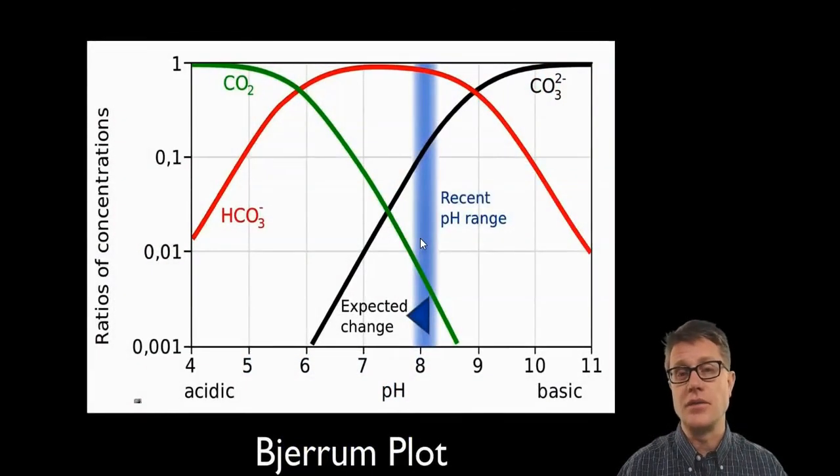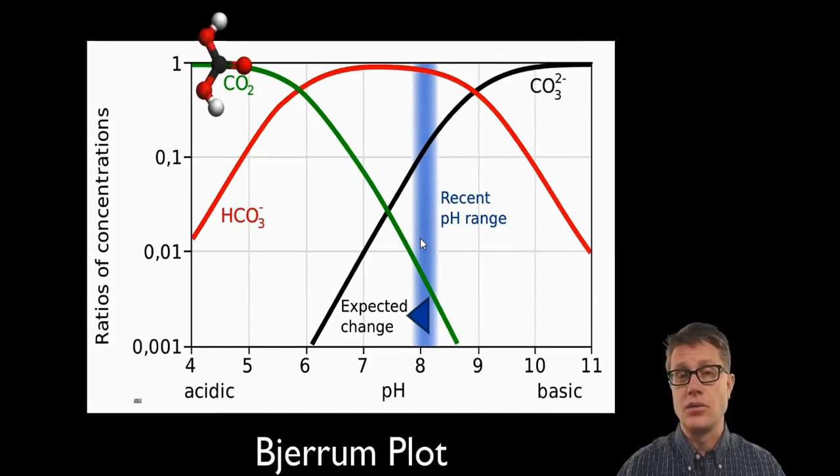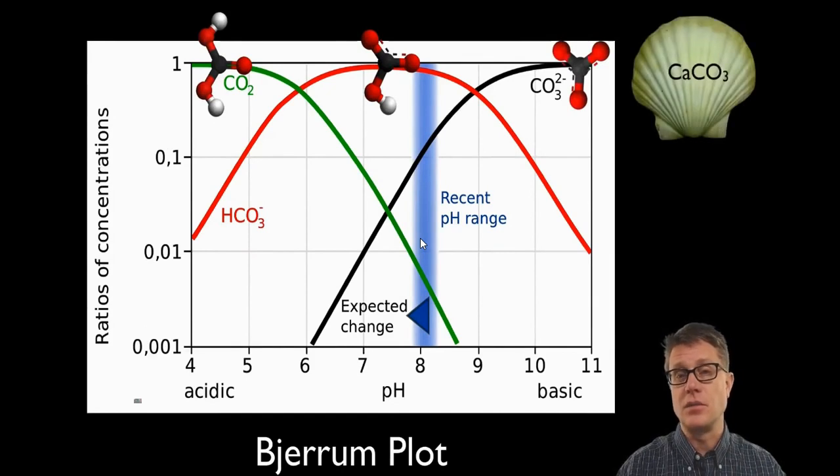So we can use a Bjerrum plot to figure out what's going to happen over time. These are log scales of the concentration of these three compounds. The green represents the amount of carbonic acid. The red line represents the amount of bicarbonate. And then the black line represents the amount of carbonate. Remember, that's important for shells. And so if we look at it at acidic levels, carbonic acid is going to dominate. At neutral levels, bicarbonate is going to dominate. And then at basic levels, those that we would find in the ocean, carbonate is going to dominate.